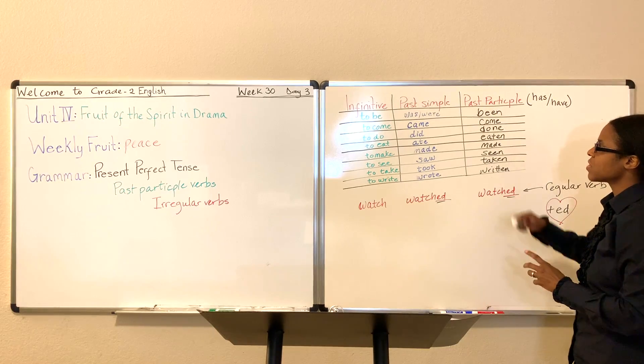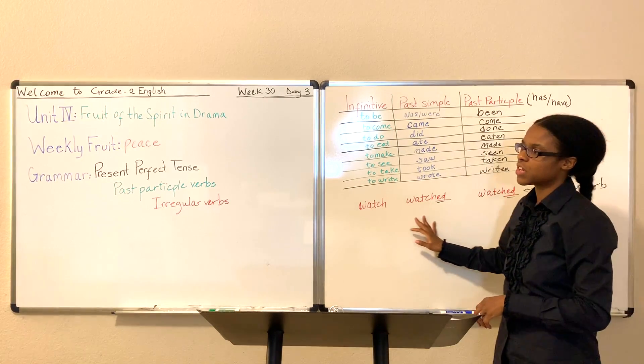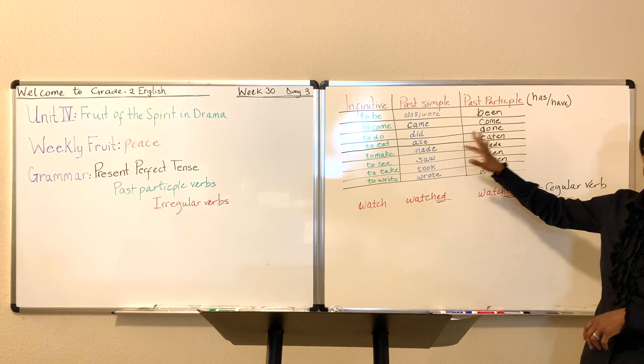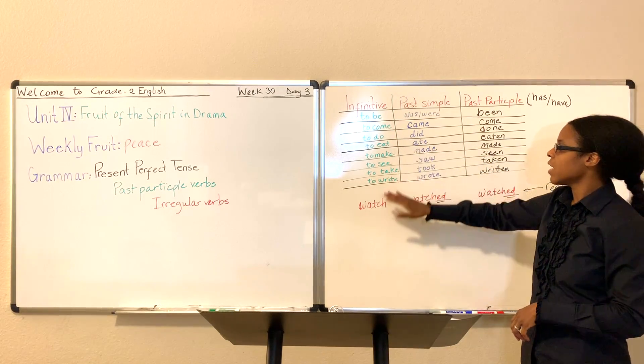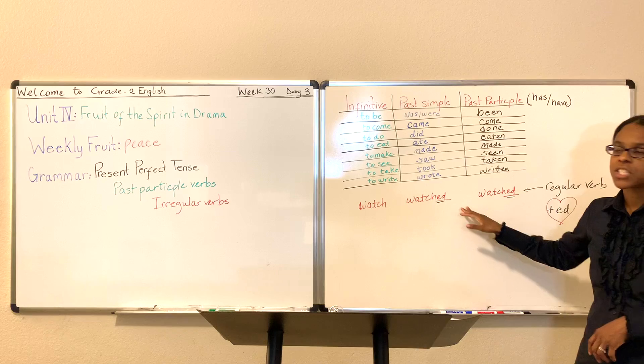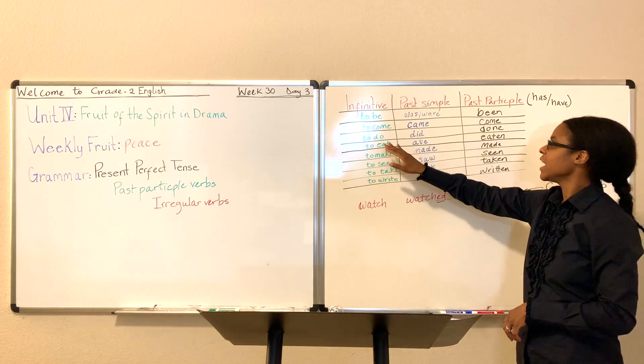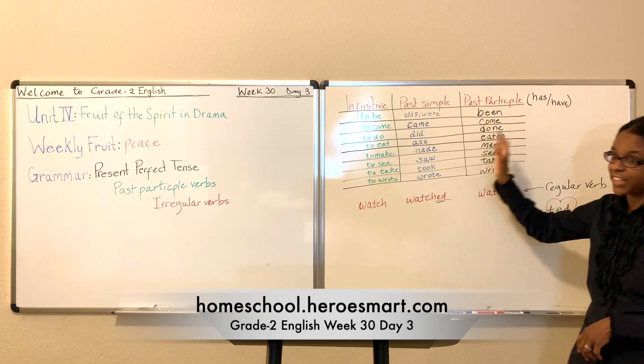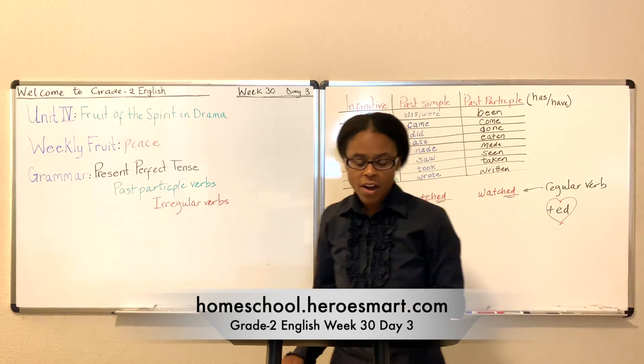So, I just wanted to give you this chart so you can compare regular verbs with irregular. See how many different forms they take. Here you have watch, watched, watched, regular. Here you have do, did, done. Irregular. Right? Irregular. Okay, boys and girls.